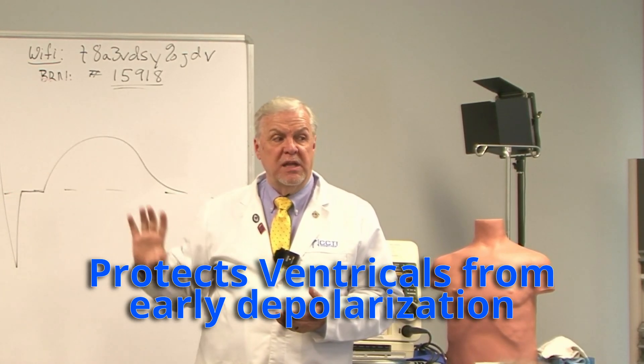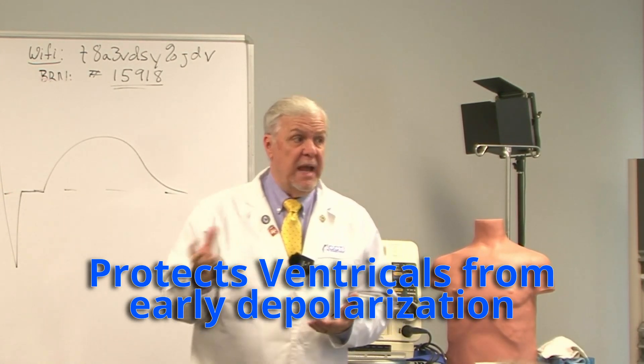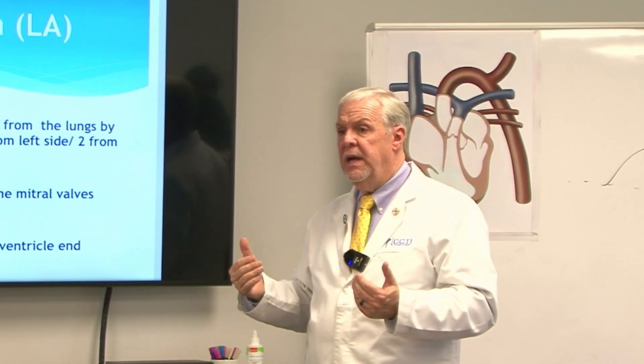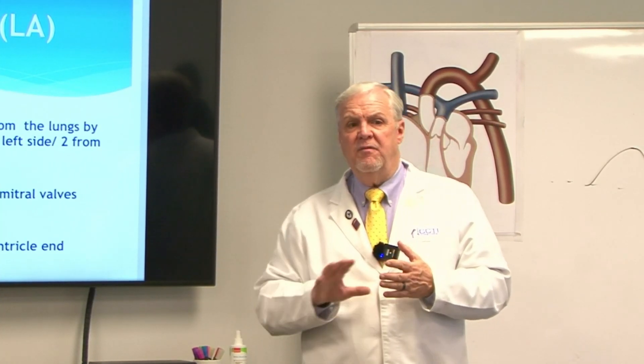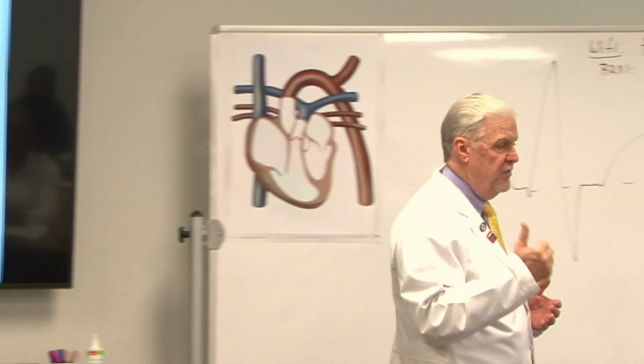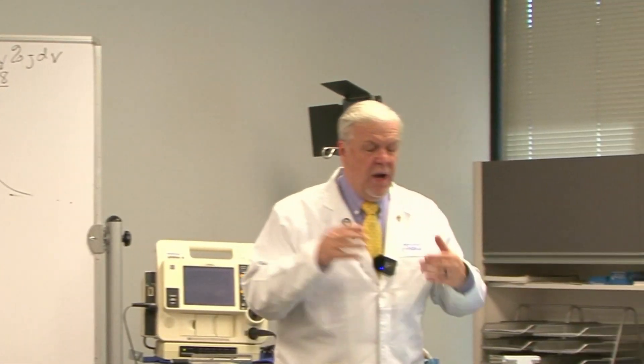The AV node acts as a gatekeeper, slowing conduction to prevent electrical energy from reaching the ventricles too soon. It allows the ventricles to receive passive blood flow, and it delays the electrical impulse so the atrium can complete its atrial kick. When we see disturbances on an ECG, we're looking at electrical activity — but we must also be thinking about the myocardium, coronary perfusion, and what's going on or not going on. They're all connected.